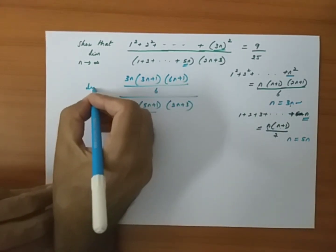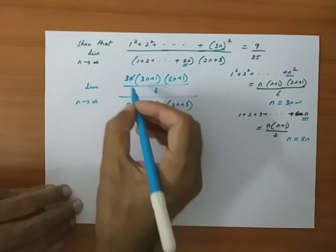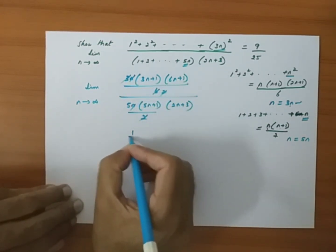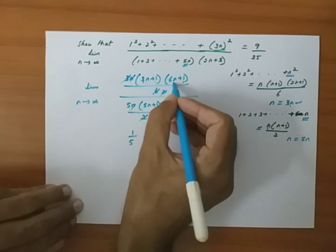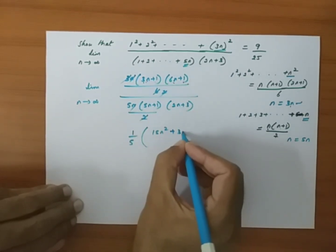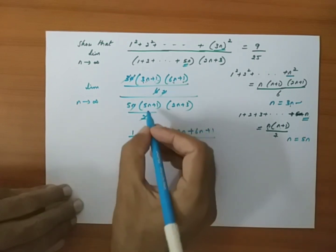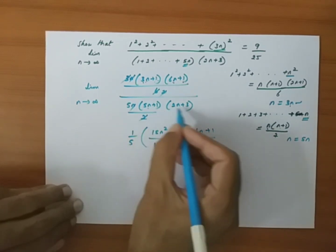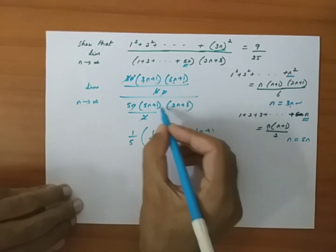Now I will write here limit n tends to infinity. I can cancel this n with this n, and 3 divided by 6 gives a factor of 2. Once again this 2 and 2 cancel. So I take 1 by 5 out, and remaining will be 3n plus 1 into 6n plus 1. Multiplying: 3n into 6n gives 18n squared, 3n into 1 gives 3n, 1 into 6n gives 6n, and 1 into 1 gives 1, divided by 5n into 2n gives 10n squared, 5n into 3 gives 15n, 1 into 2n gives 2n, and 1 into 3 gives 3.